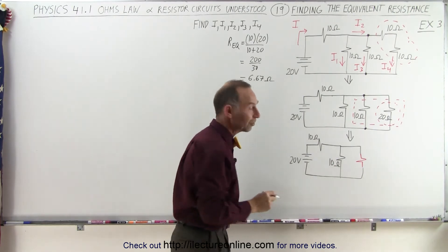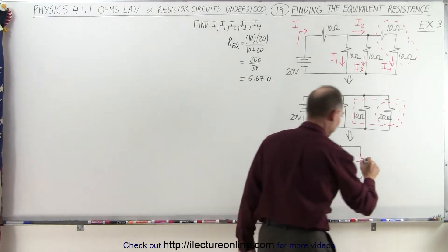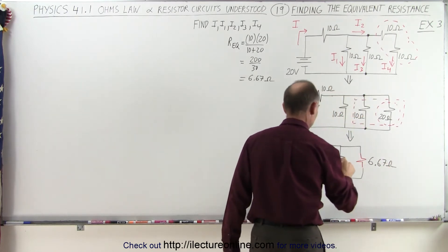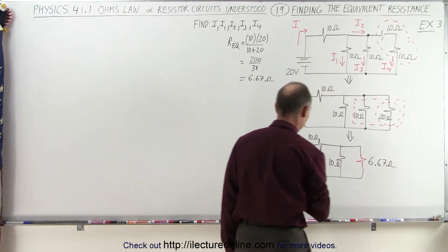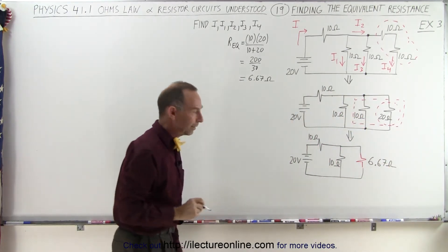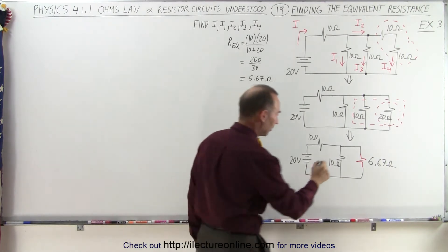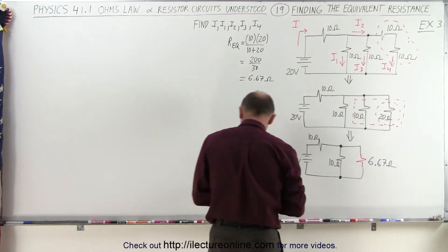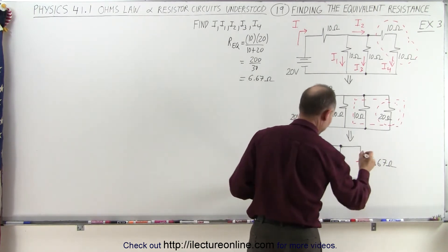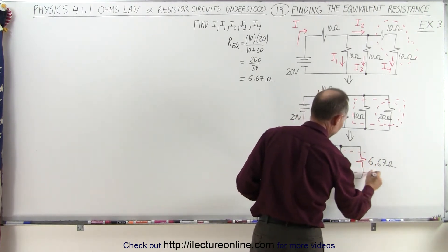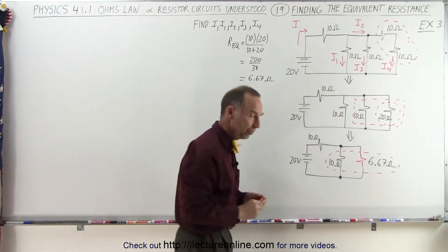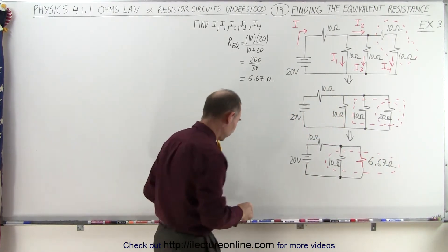That's a single 6.67 ohm resistor paired with the 10 ohm resistor. Again we repeat the process — we pick this branch point and this branch point, and we want to take those two resistors and turn them into a single equivalent resistor. Again they're in parallel, so we have to use the product over sum rule.